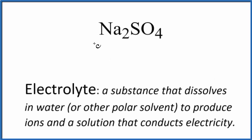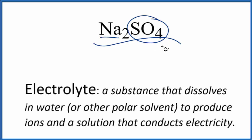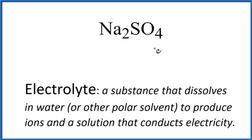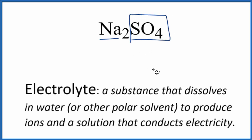In this video, we'll look at whether Na2SO4 is an electrolyte or a non-electrolyte. This is sodium sulfate. The first thing we'll do is look at what type of compound we have. Sodium is a metal, and the sulfate is a polyatomic ion — a group of non-metals. This is an ionic compound.